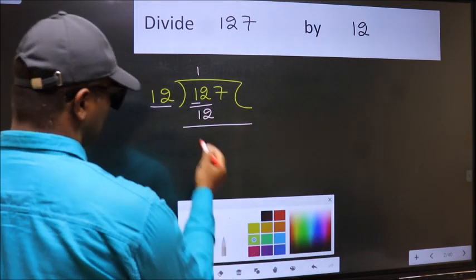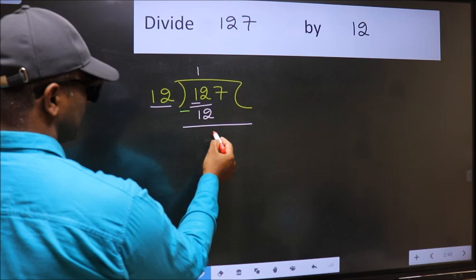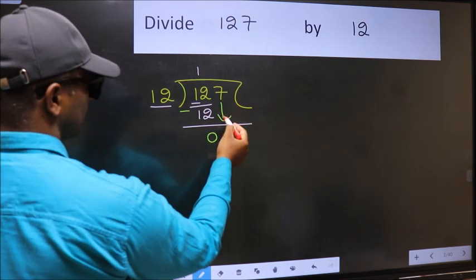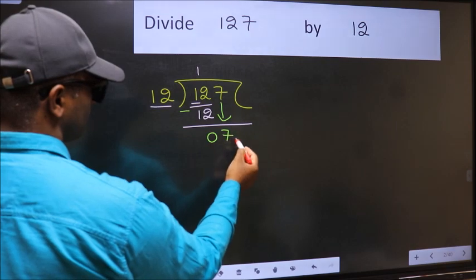Now you should subtract. 12 minus 12, 0. After this, bring down the beside number. So 7 down.